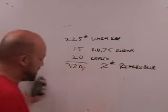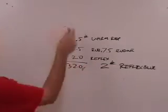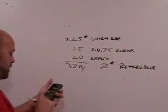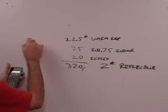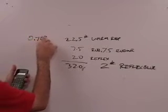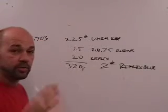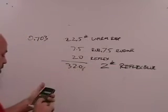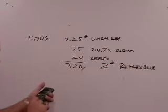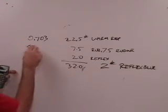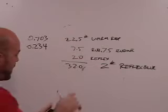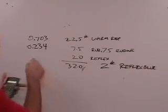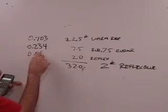Easy, no problem. Then we take each one of these, 22.5 divided by 32 equals 0.703. Let's express our ratios to three decimal places. Then 7.5 divided by 32 equals 0.234, and 2 divided by 32 equals 0.062.